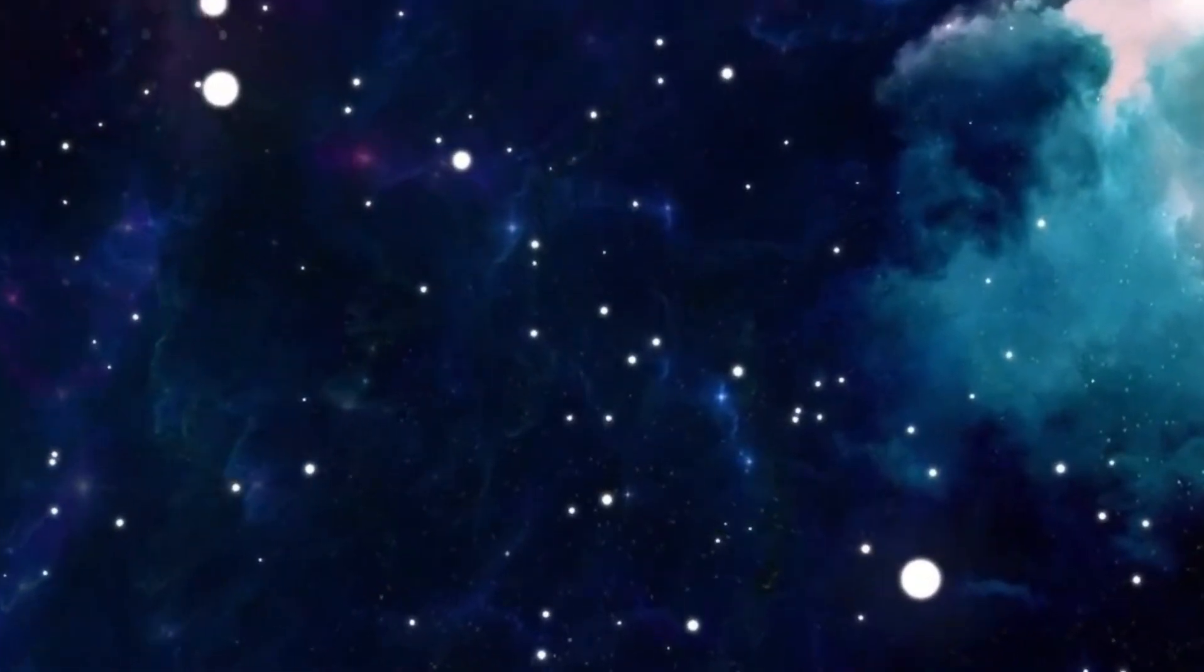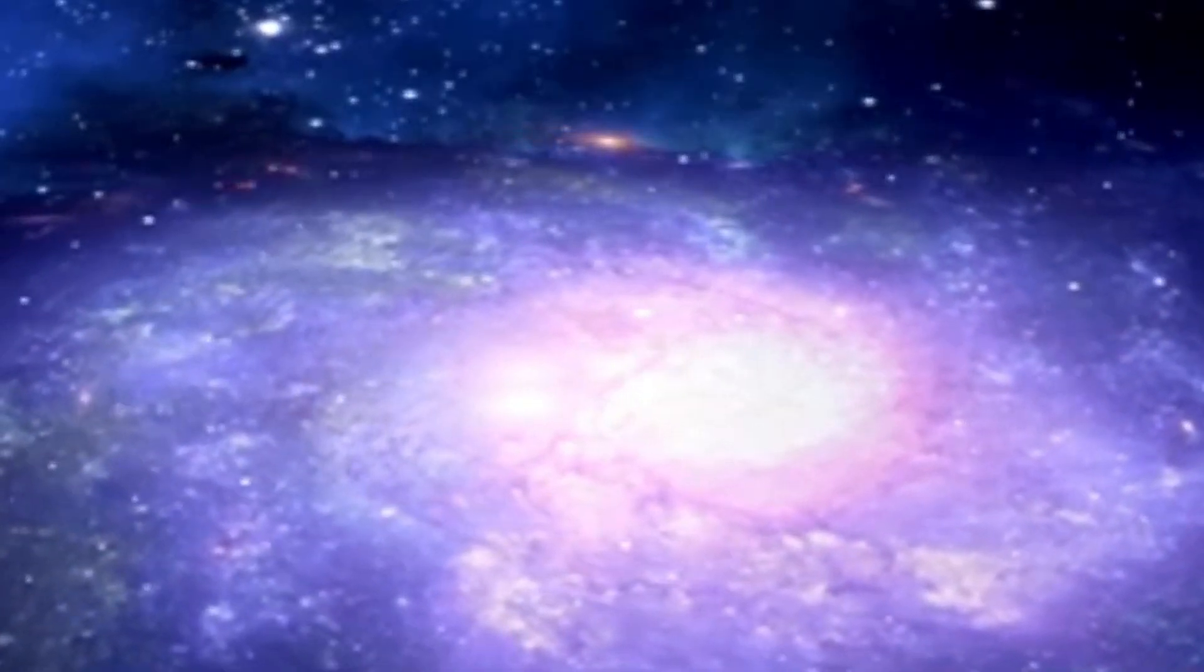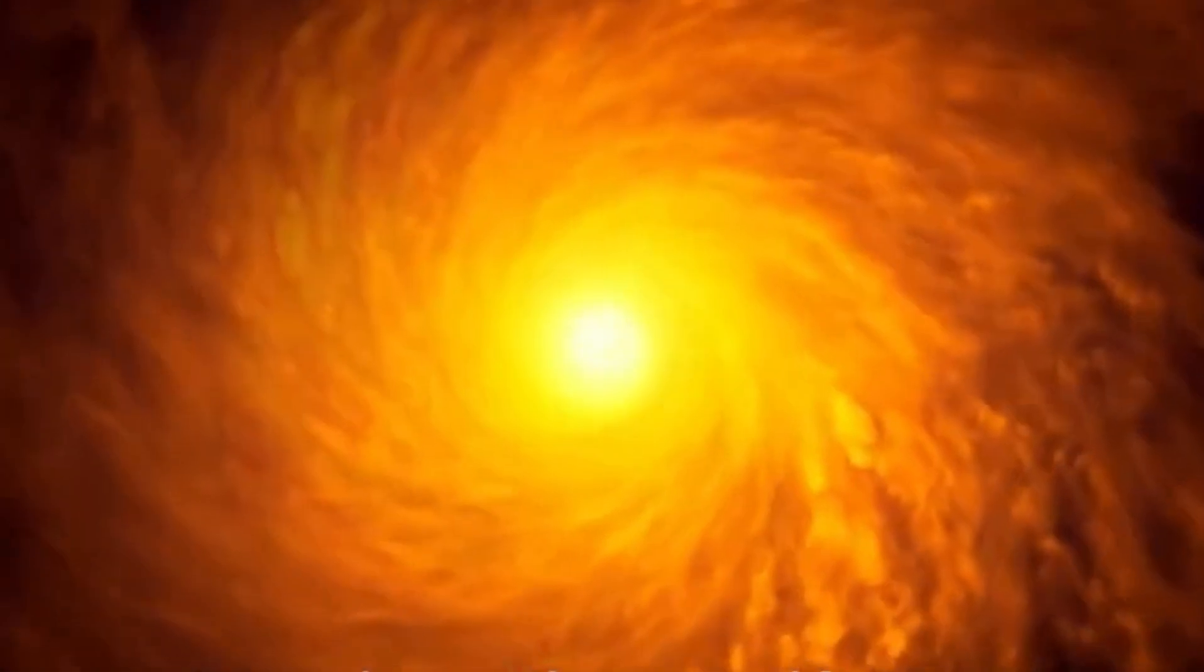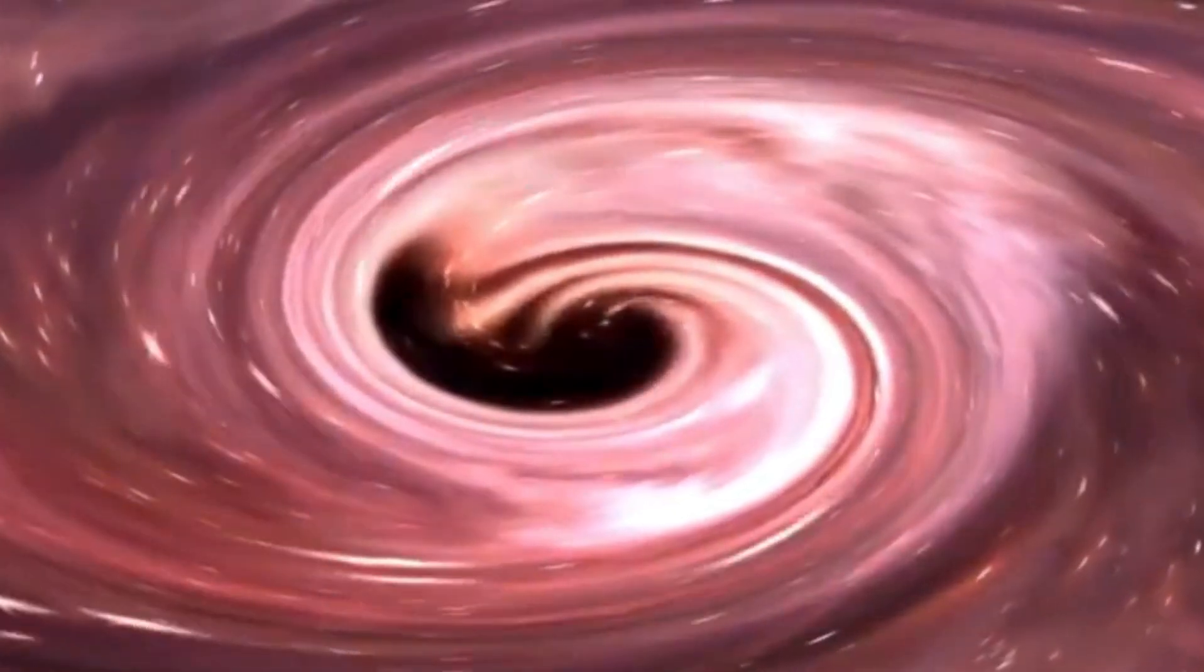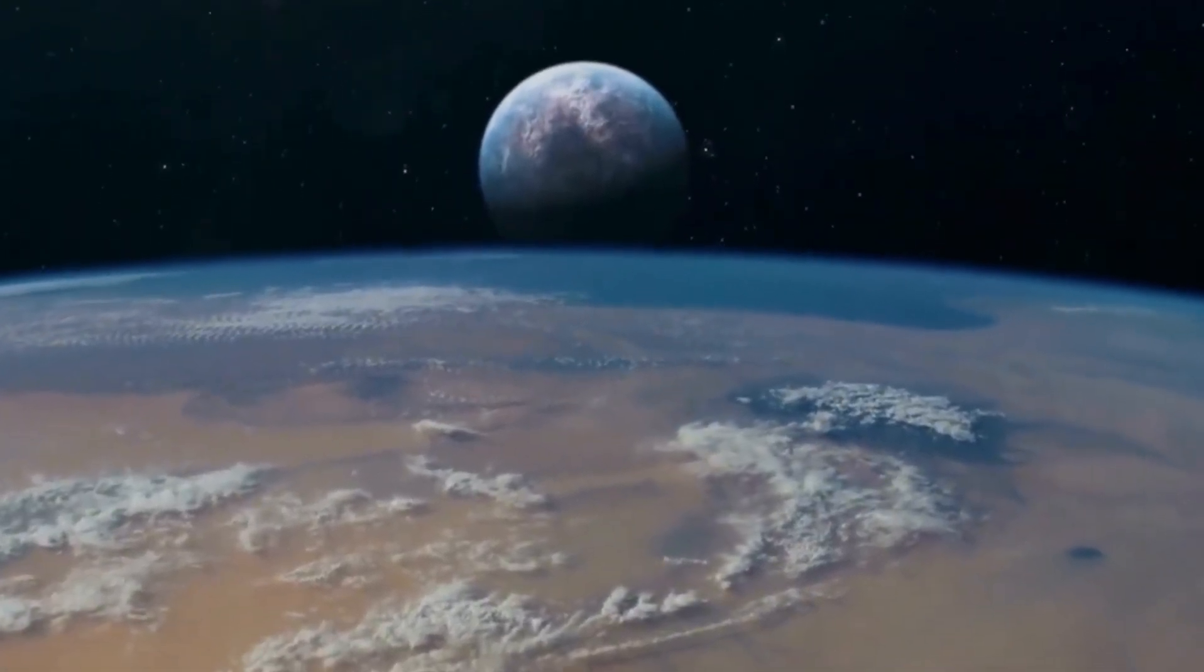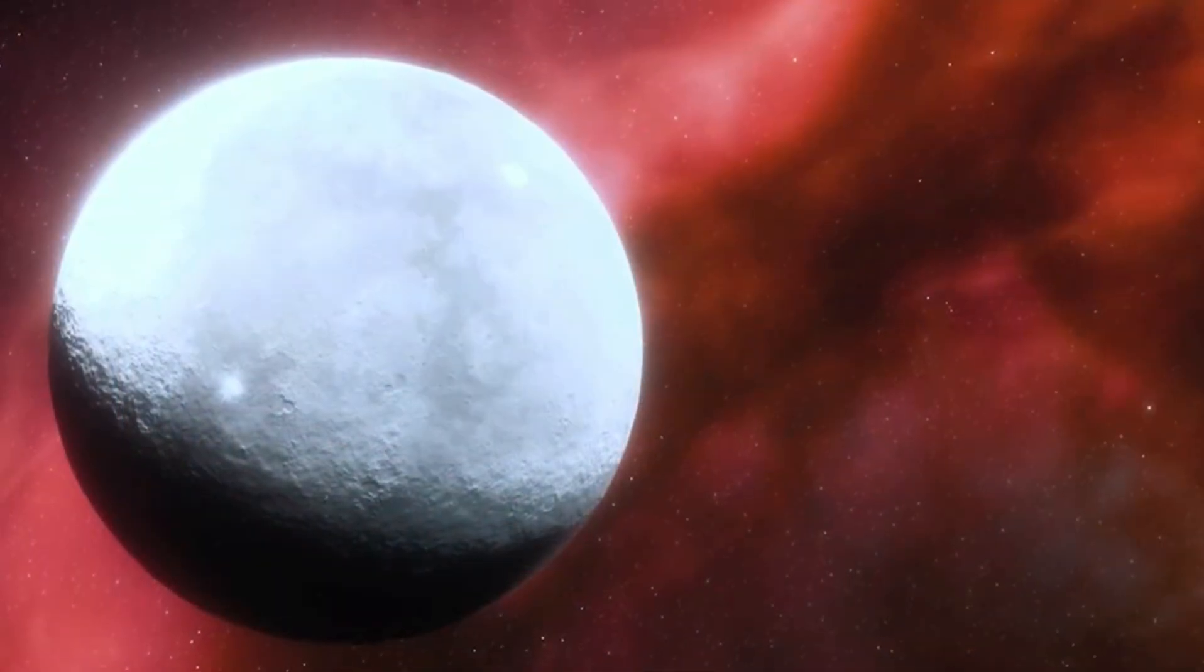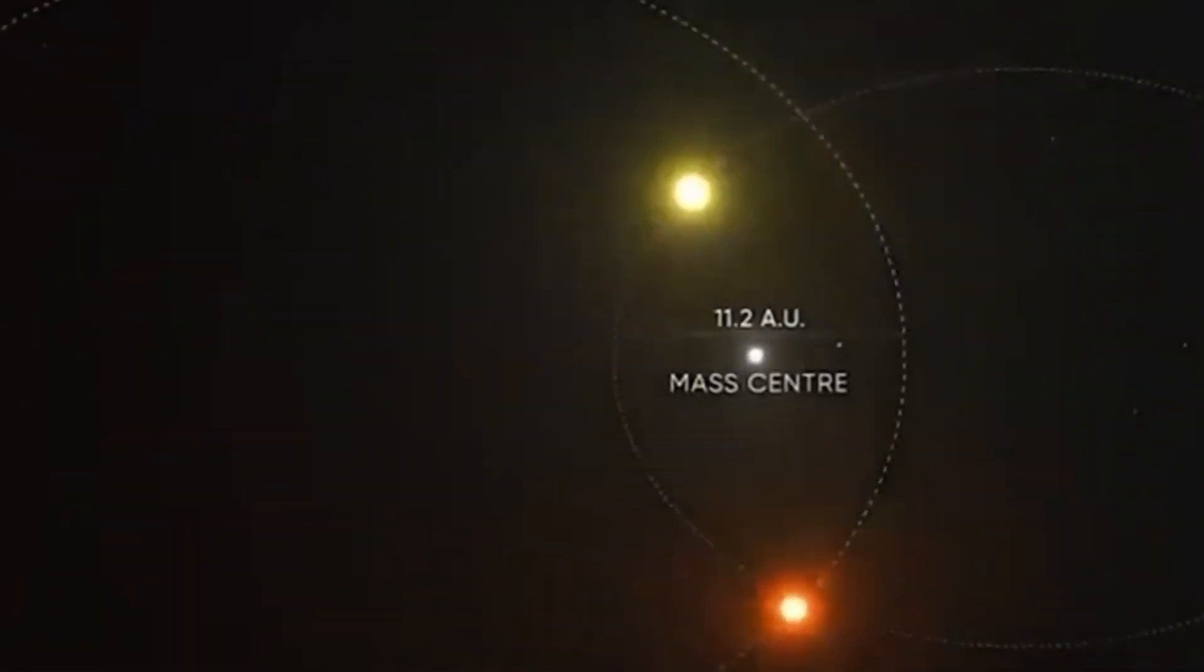Exoplanets, worlds situated beyond our solar system, continue to captivate scientists' imaginations, and thousands have already been unveiled. The quest for these extraterrestrial realms began in 1992 with the discovery of planets orbiting pulsars, a particular class of neutron stars. Three years later, scientists detected the first planet revolving around a sun-like star. Since then, numerous additional planets, including several Earth-sized worlds within their stars' habitable zones, have been unveiled.